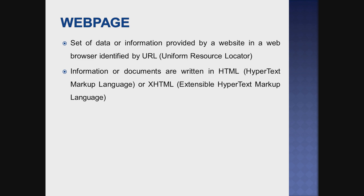Next is web page. It is a set of data or information provided by a website in a web browser, identified by a URL. How do you identify a web page? Through URL — every web page has a URL, that is called a Uniform Resource Locator. Every web page has its own address.